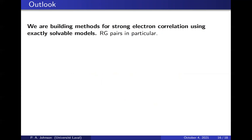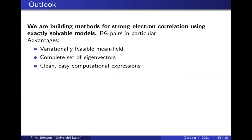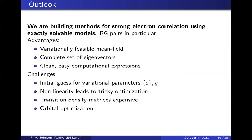So we are building methods for strongly correlated systems using exactly solvable models as a reference, in particular RG pairs. These are variationally mean field feasible, meaning that you can compute everything you want with a cost that is very small, like order n to the fourth to evaluate the energy. The optimization is a little tricky. You get a complete set of eigenvectors and everything is clean and easy to compute.